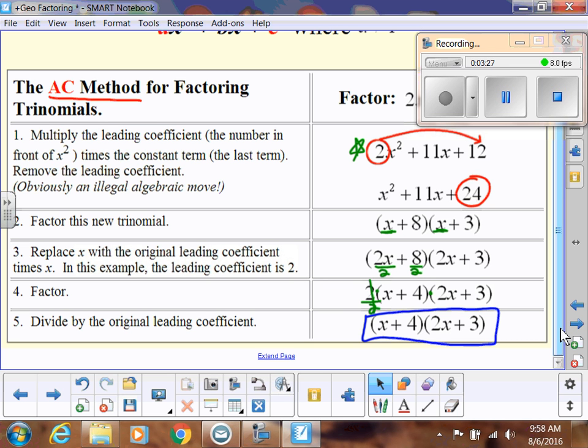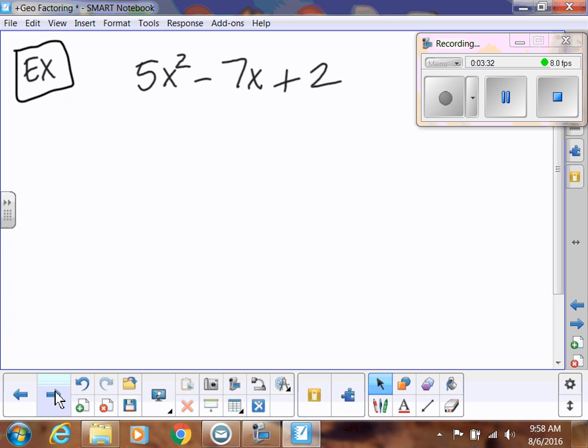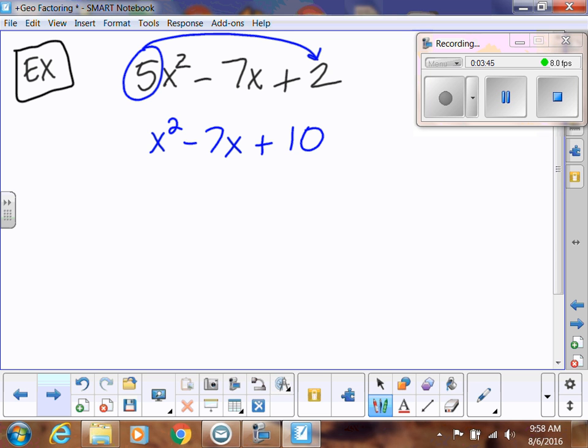Let's do one more just to get the process down. We multiply a times c, and then I don't write that original leading coefficient. So this is going to be x² - 7x + 10. Then I'm going to factor. I need two numbers that multiply to give me 10, add to give me 7. It's a negative 7, so they both should be negative. That's going to be 5 and 2.